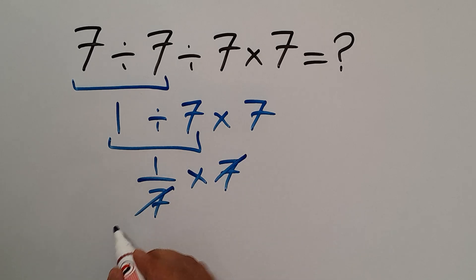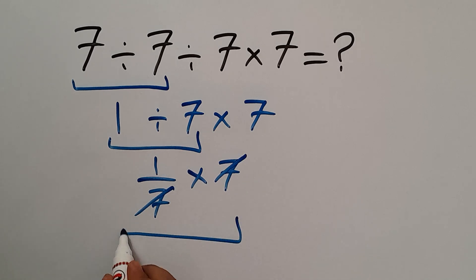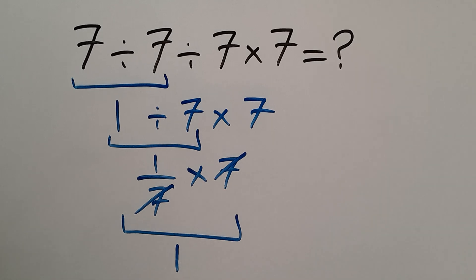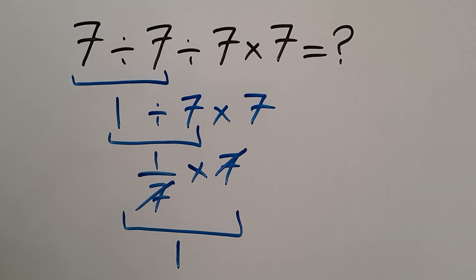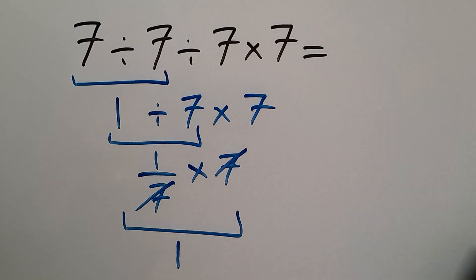We can easily cancel this 7 and this 7, and we have just 1. So therefore our final answer to this problem is 1.